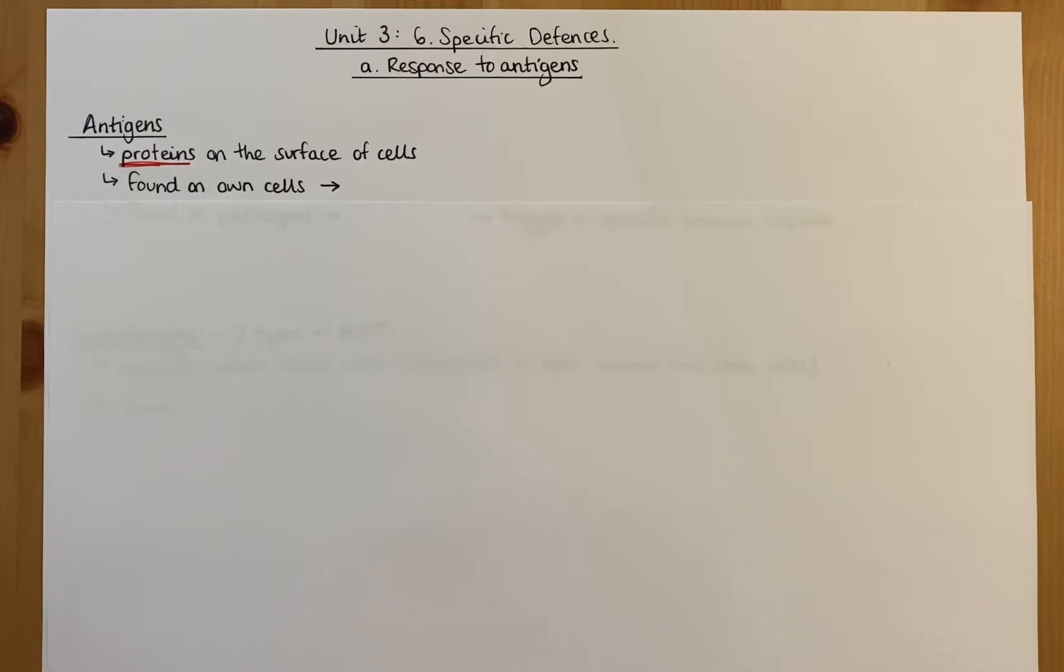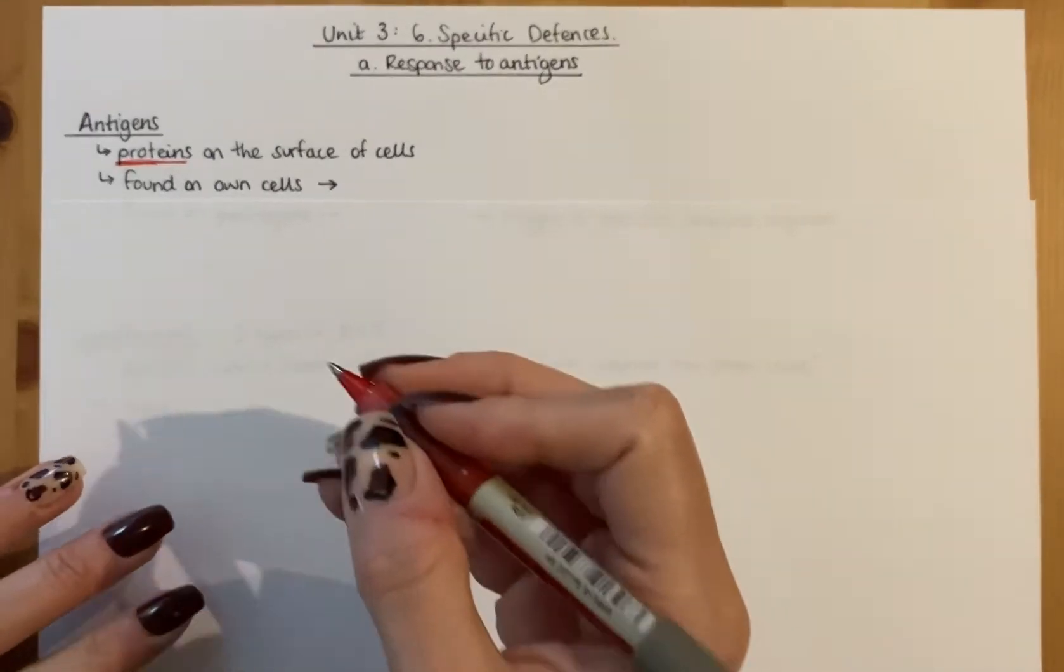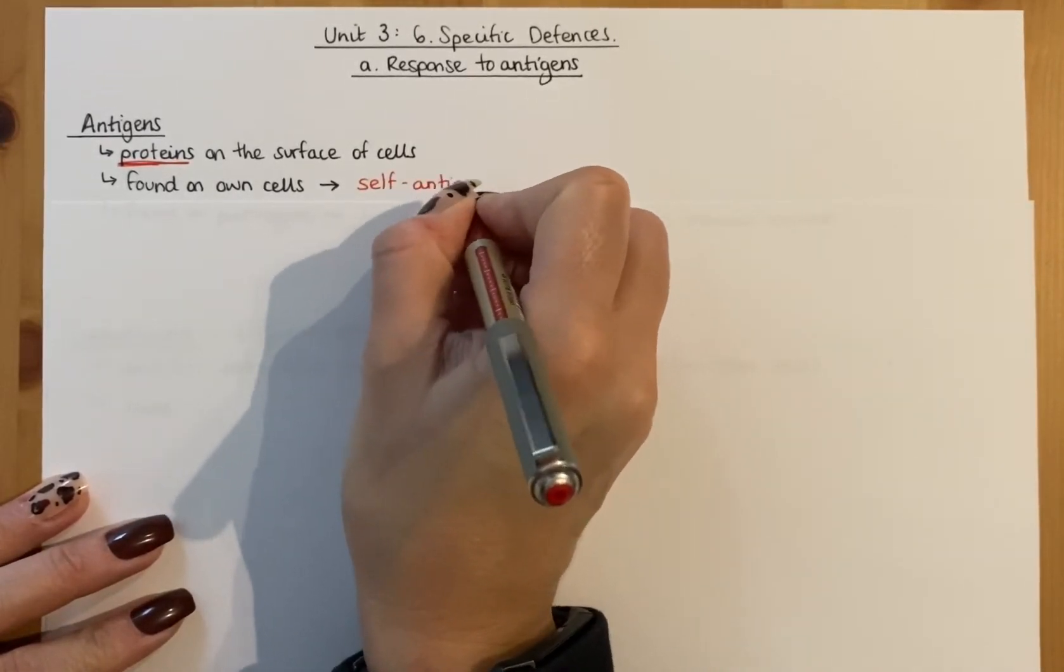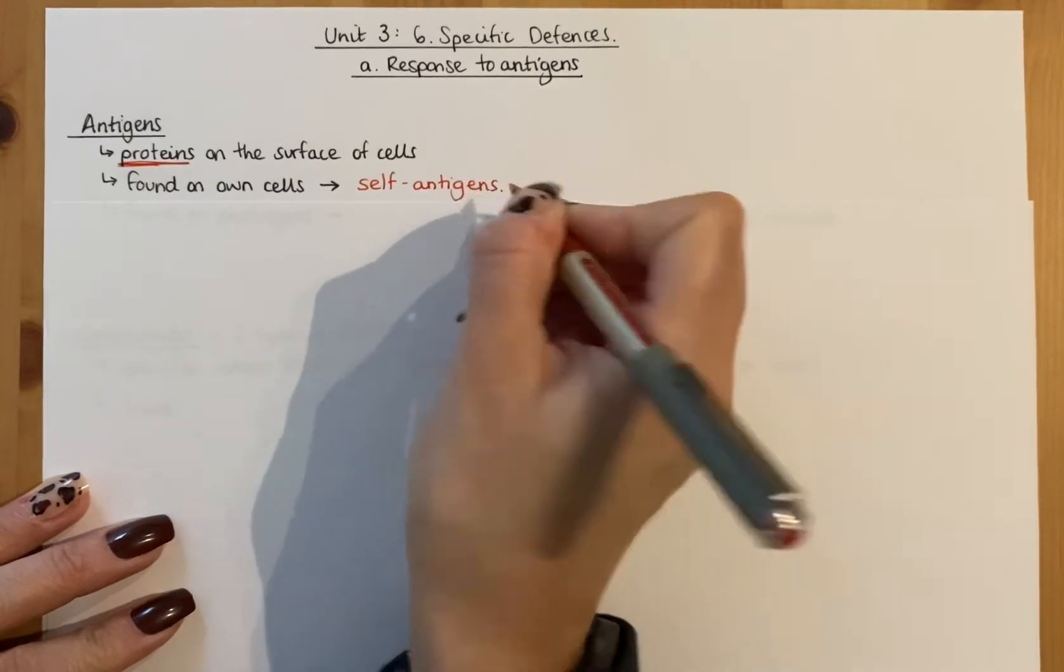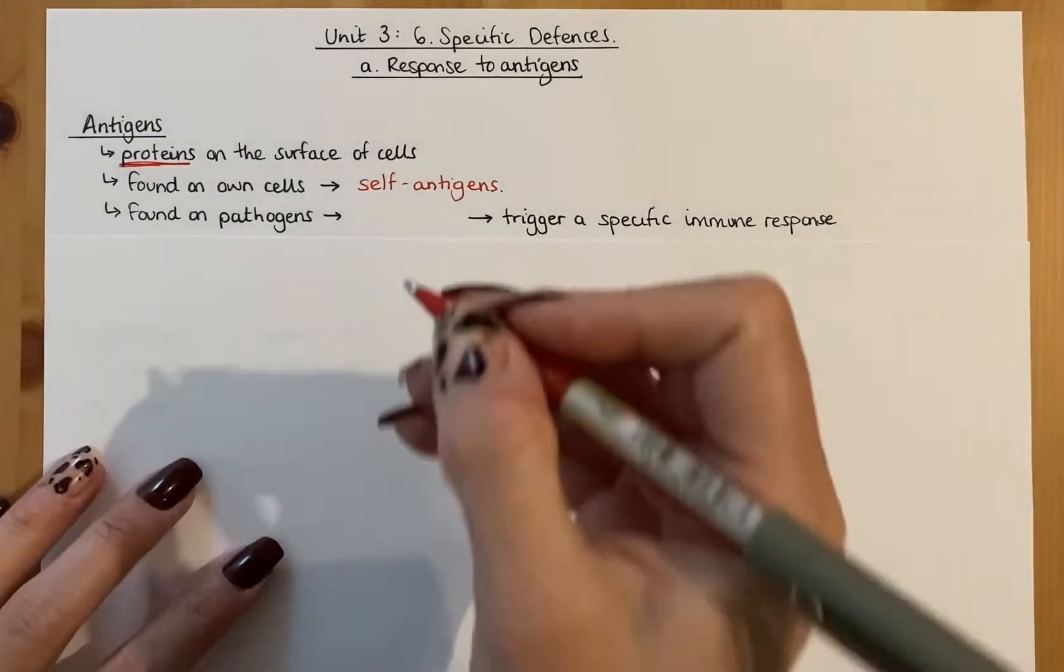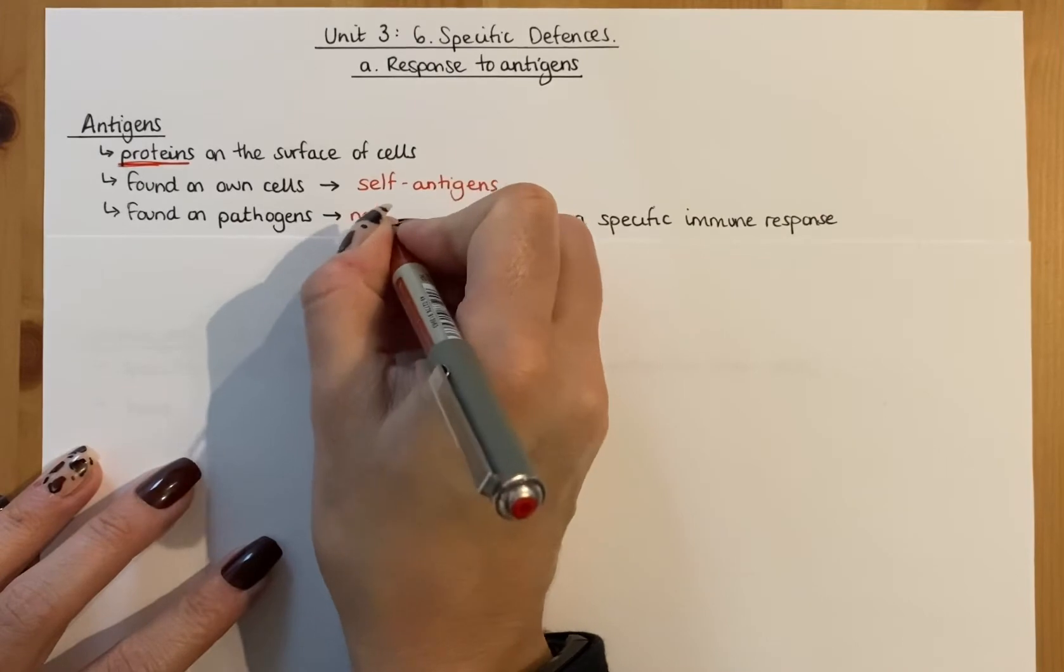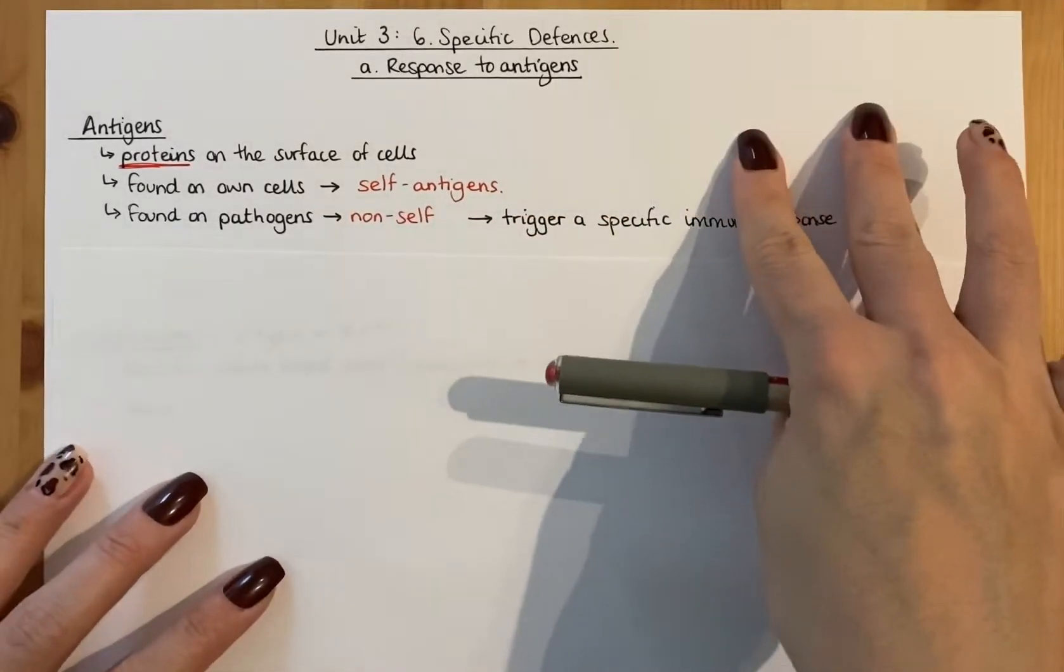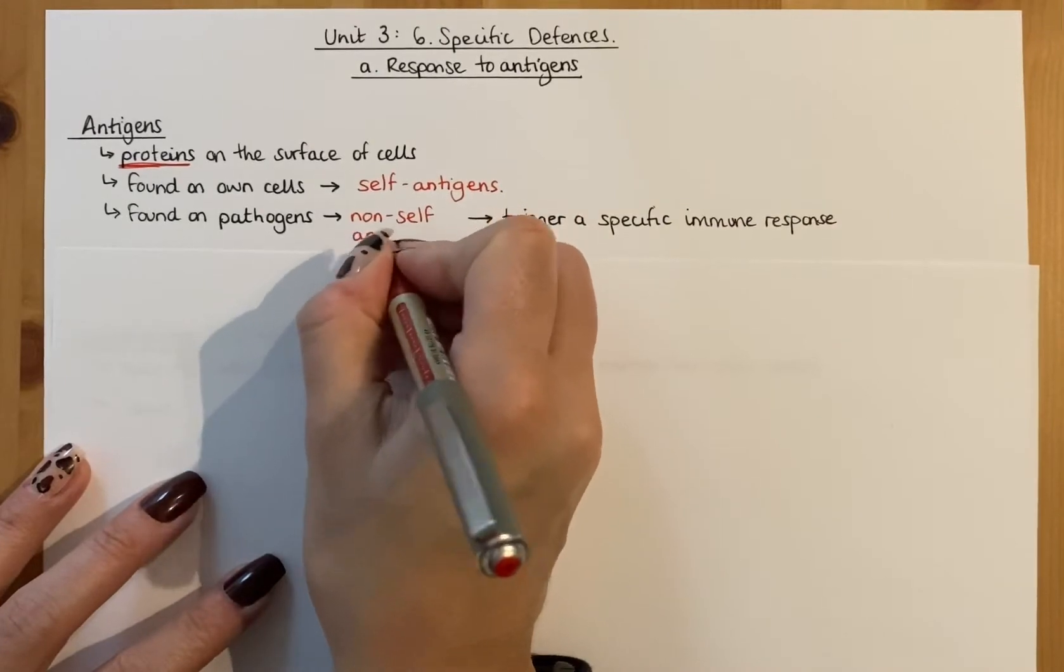So you do have antigens on almost every cell in your body and they're described as what's called self-antigens. As in they belong to the self, yourself. And then we also have pathogens that have their own antigens, and they're called non-self antigens.